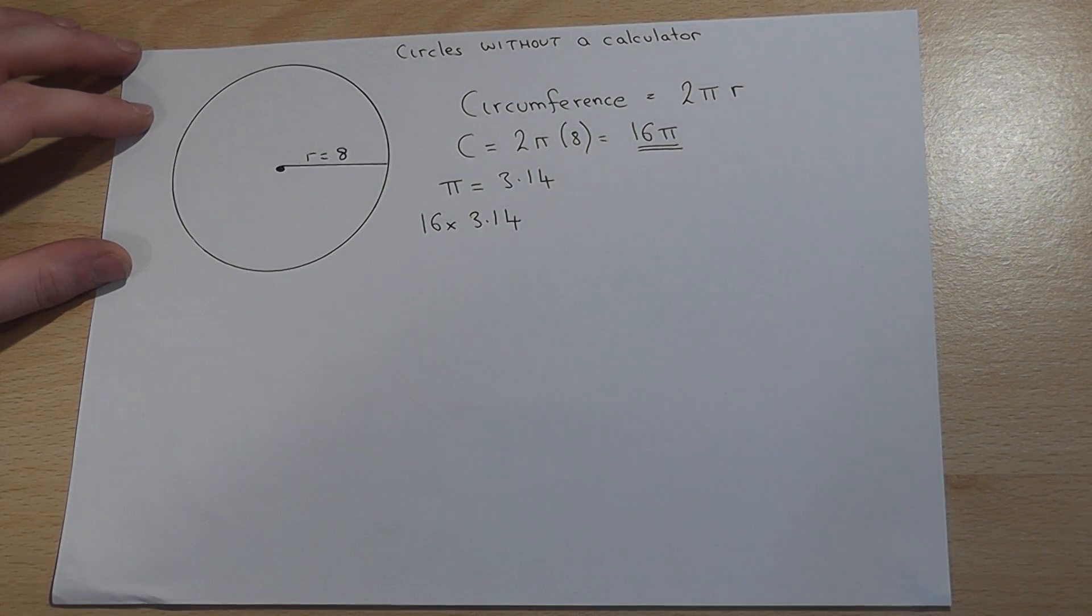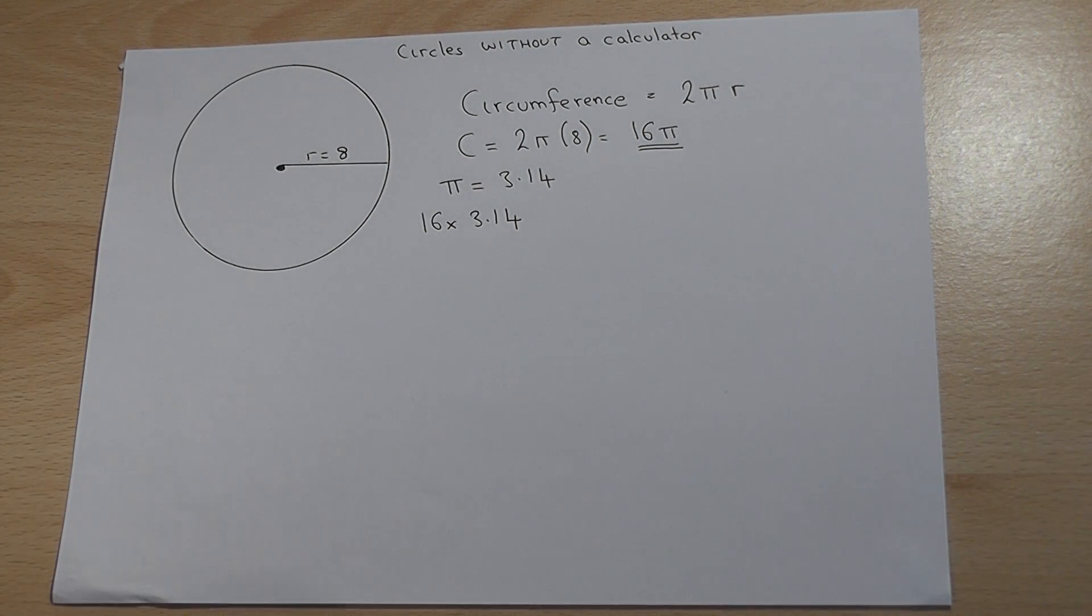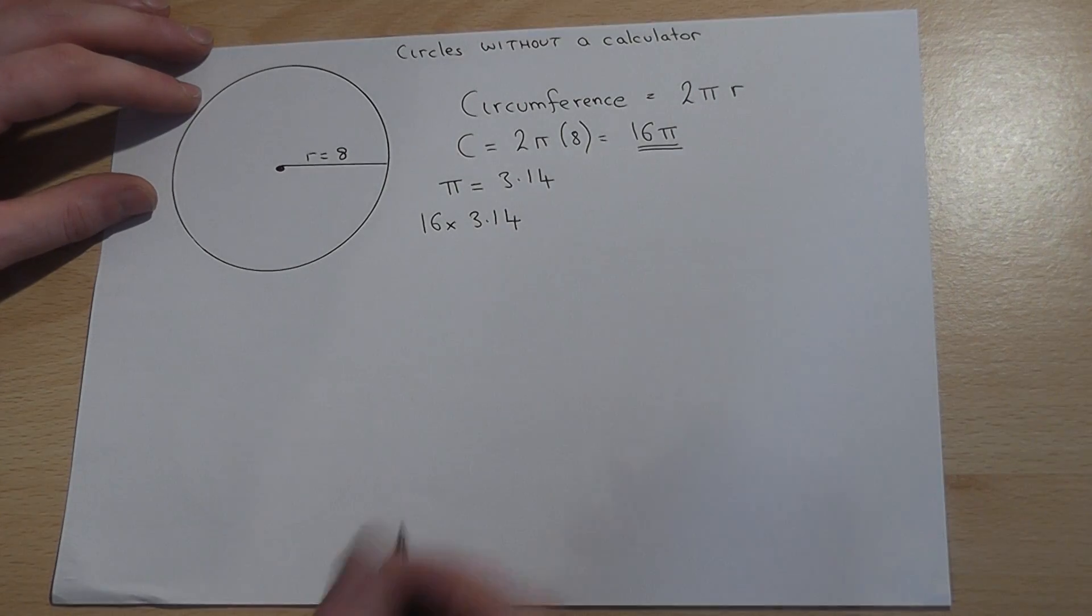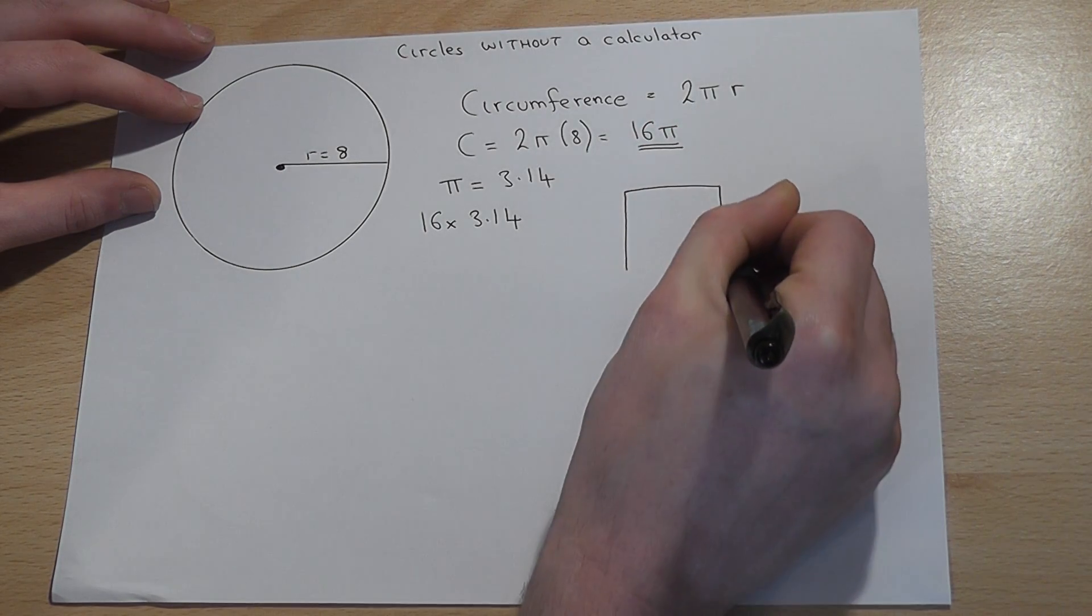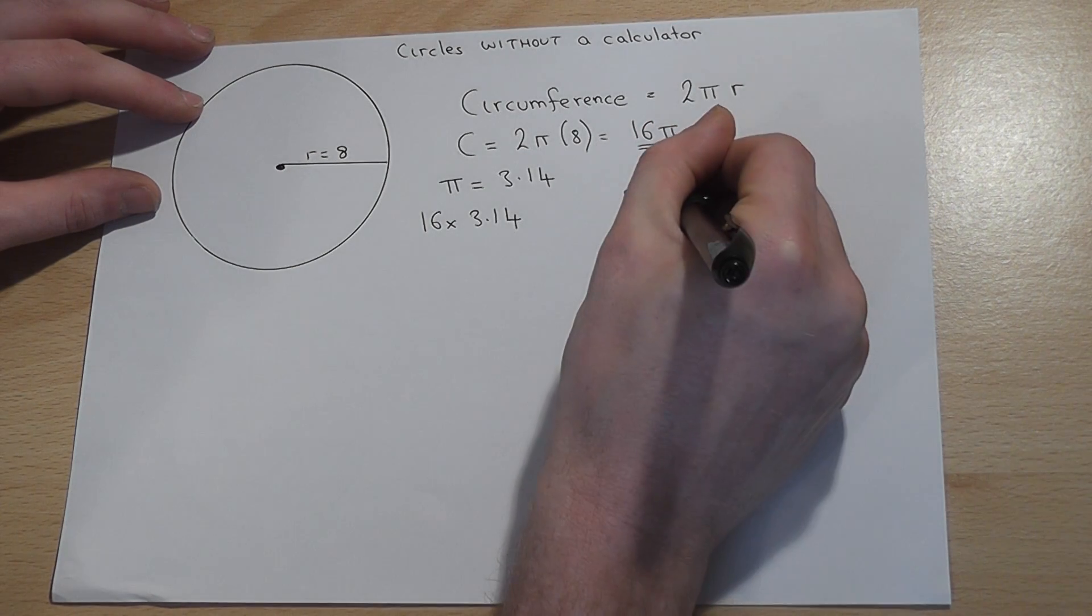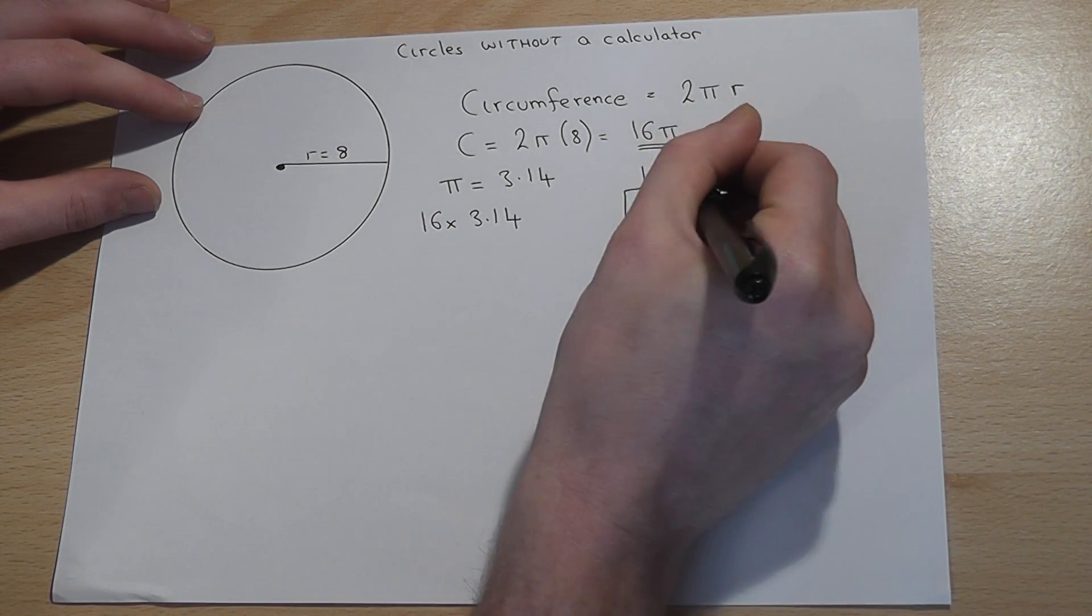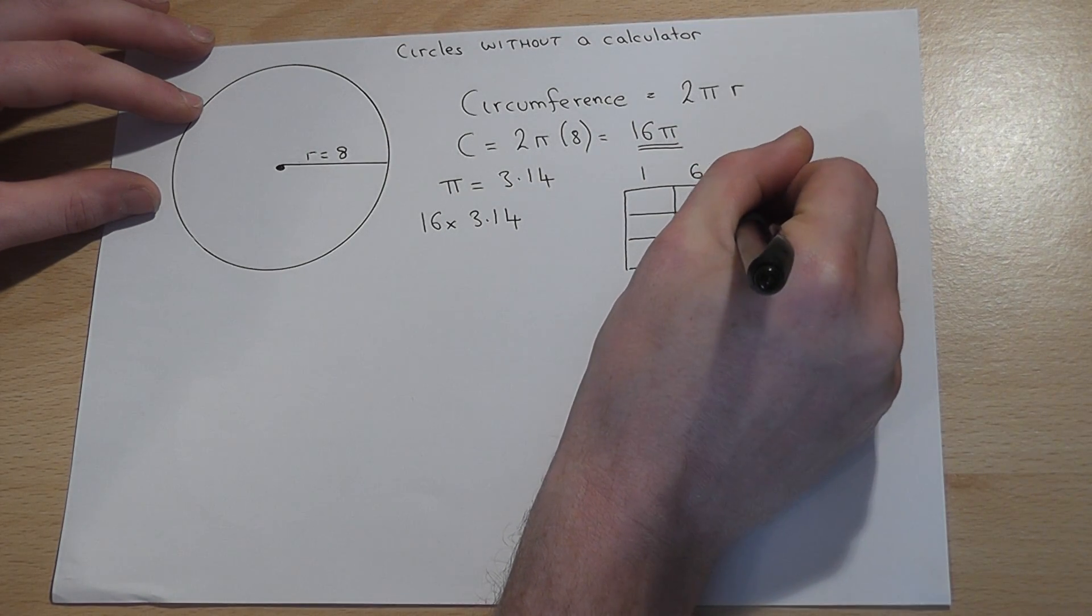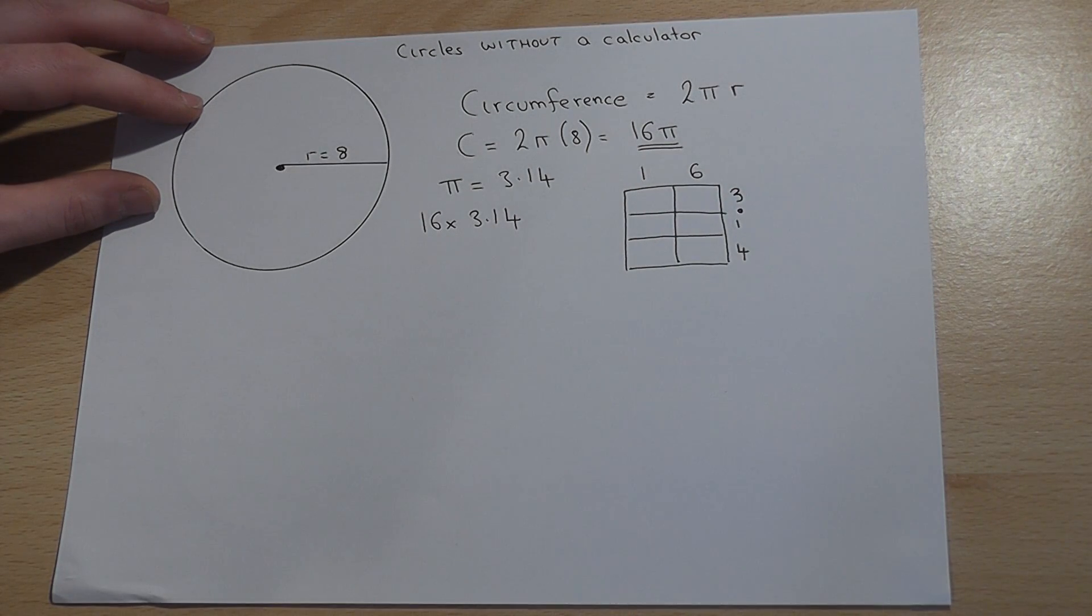There's a nice way of working out such a calculation which should help to maximize the chance of getting it right in the actual exam itself, and it's using the grid method. To work this out, you draw a grid made of squares, and you write 16 in this case across the top and 3.14 down the side.